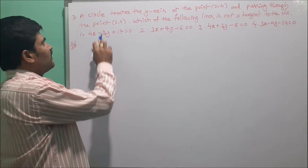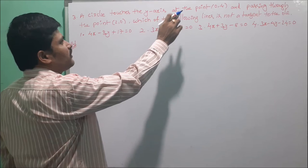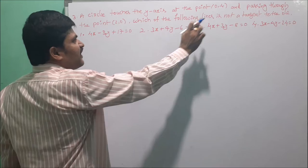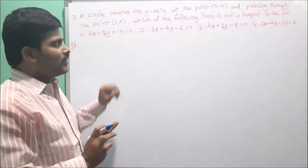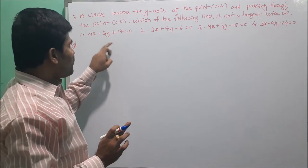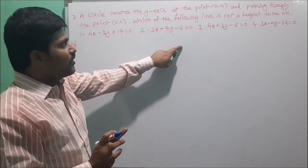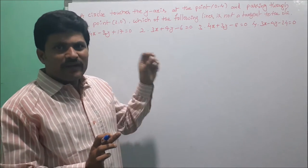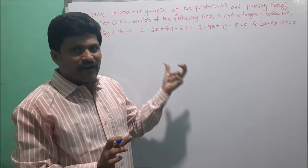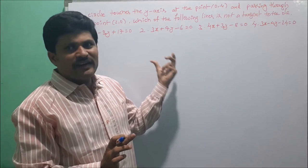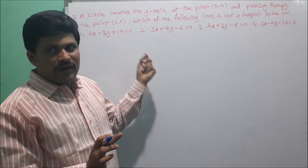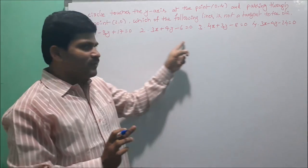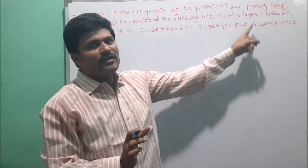The third problem: a circle touches the y-axis at the point (0, 4) and passes through the point (2, 0). Which of the following lines is not a tangent to the circle? We need to find, among the four given options, which line is not a tangent. First, we find the equation of the circle using the center and radius, then check perpendicular distance equals radius.